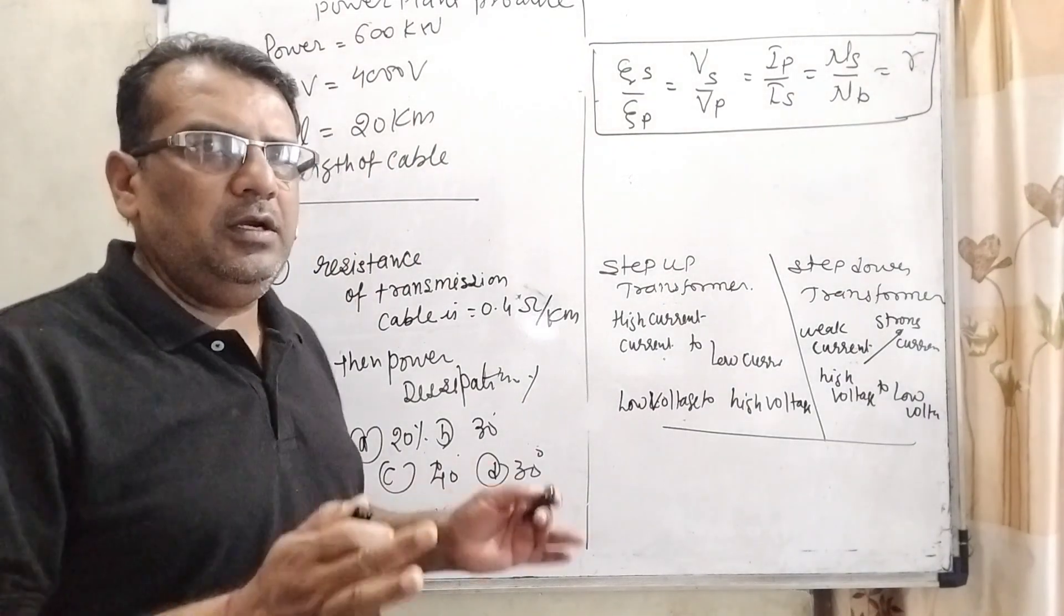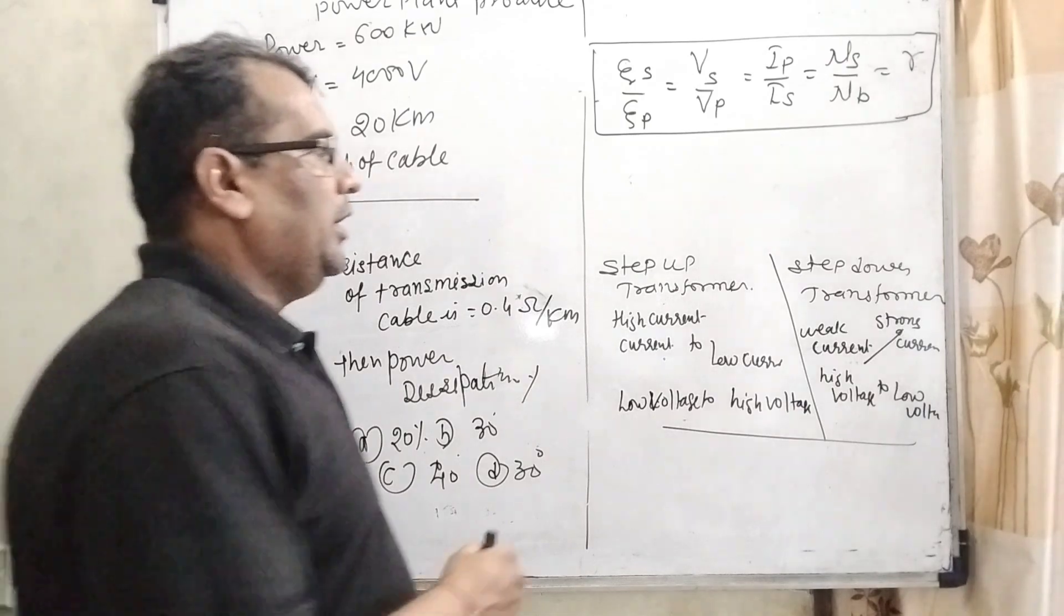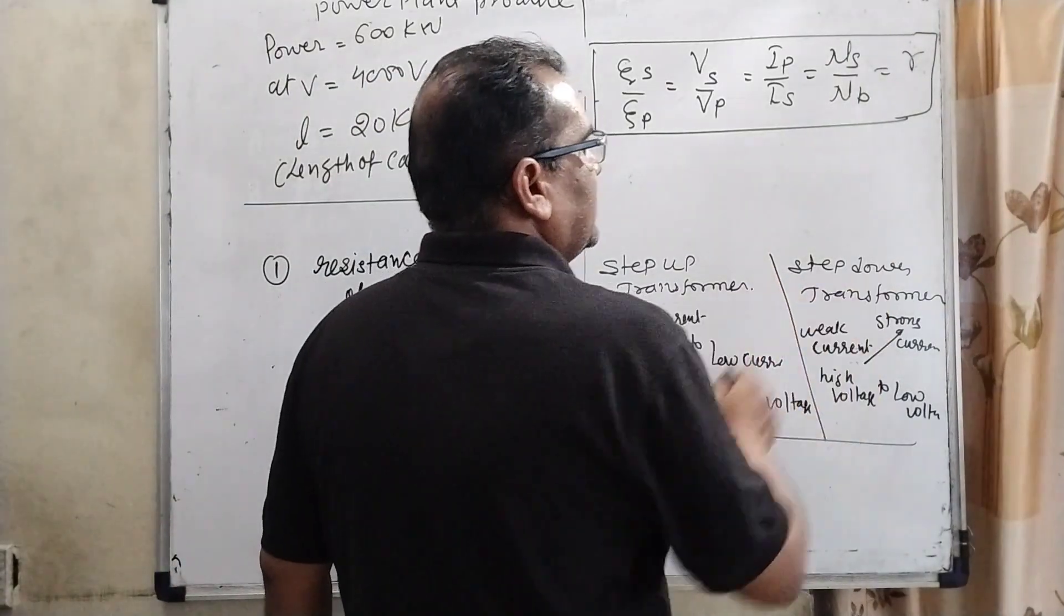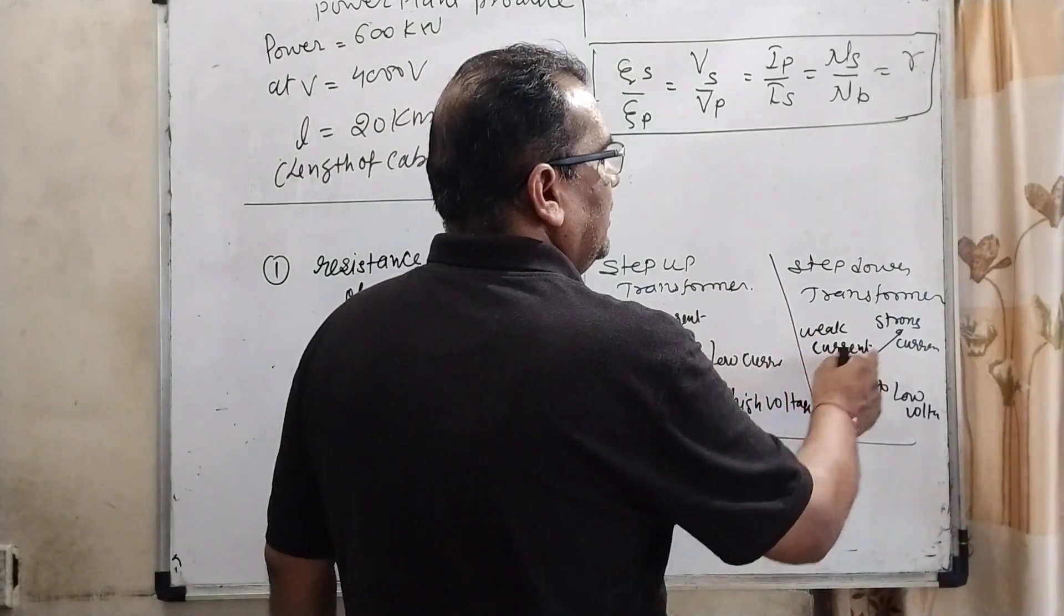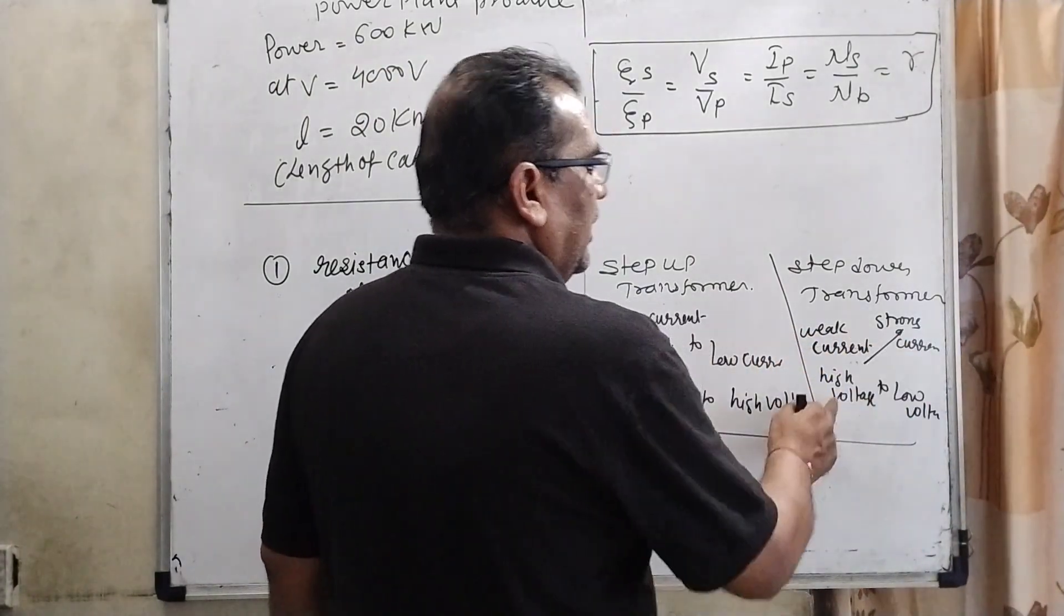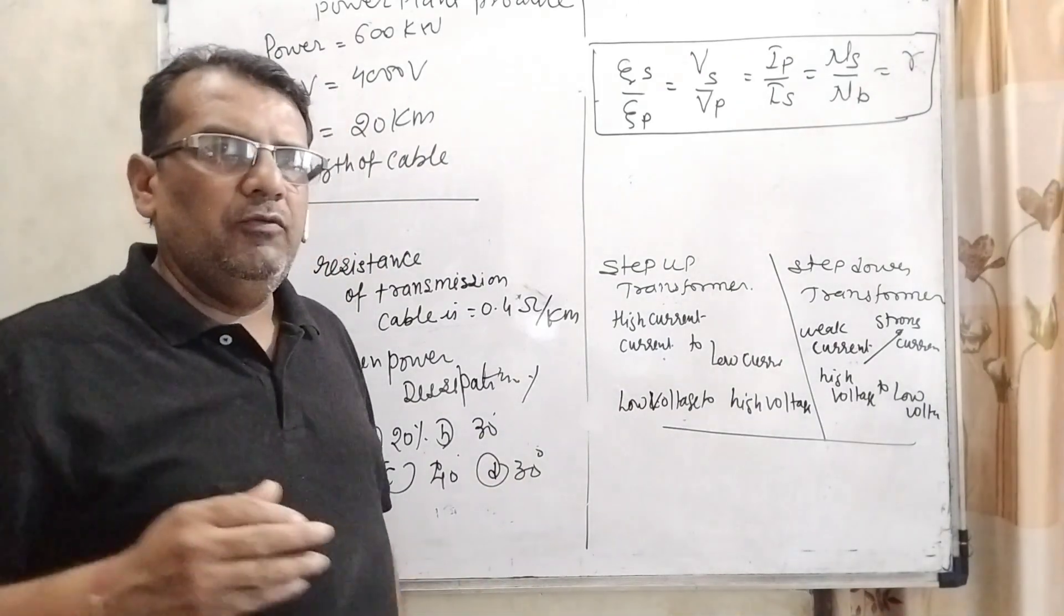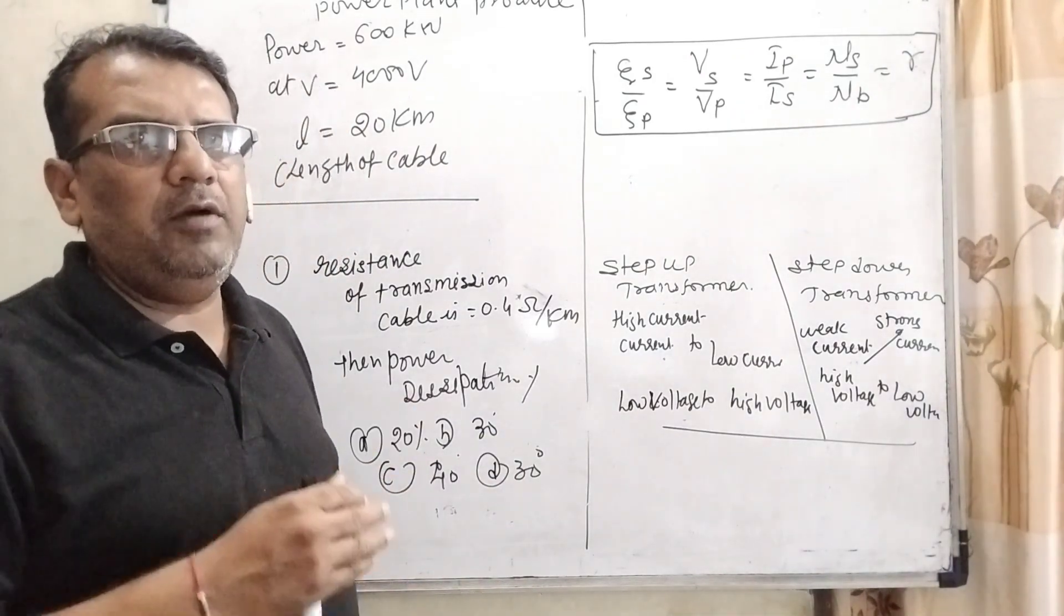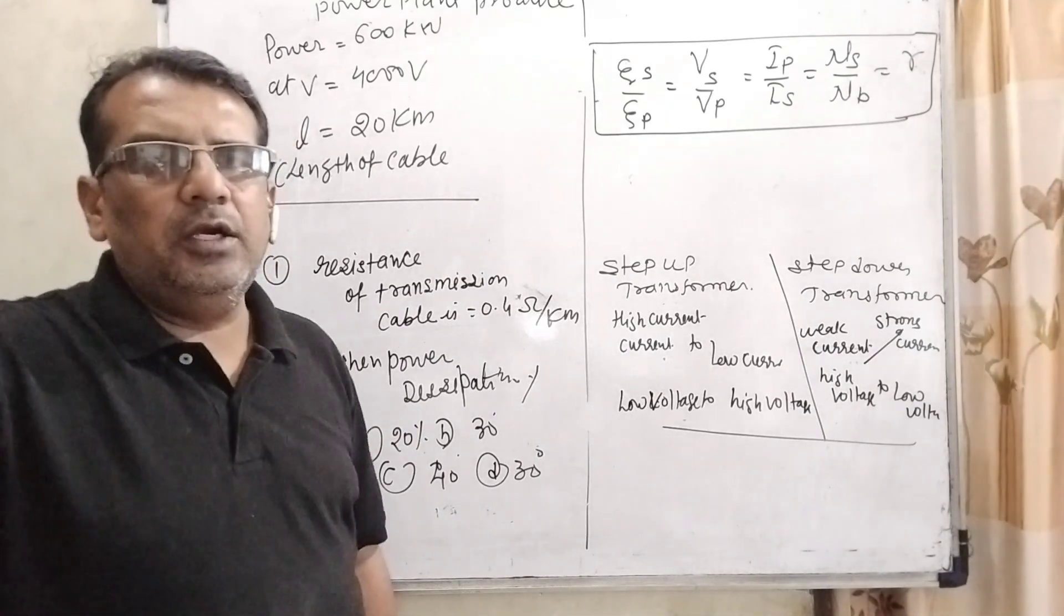Grid where the electricity is transported to the consumers. So therefore here the step down transformer, weak current convert into strong current and high voltage into low voltage. Because when supposed to be we have produces or propagated the current directly to the consumer.